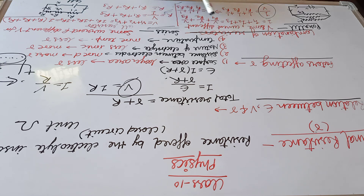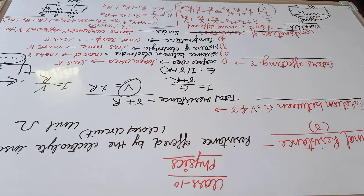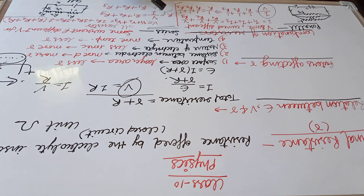Now the combination of resistors. There are two types: series and parallel. In series combination, resistors are connected one after the other with the same wire, so the same current flows but with different potential differences. The net potential difference is V = V1 + V2 + V3. Applying V = IR, we get IR1 + IR2 + IR3, and by Ohm's law, R = R1 + R2 + R3.